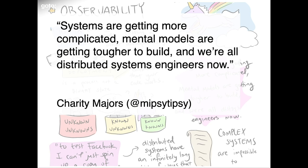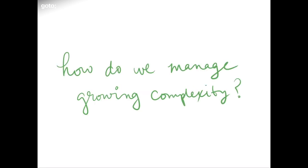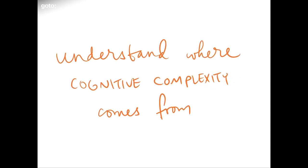Our systems are getting more complicated, mental models are getting harder to build, and everyone is a distributed systems engineer now. The part that doesn't scale — and you can't just apply a consensus algorithm to — is the human element. In some senses we're the bottleneck, but in another sense, we have endless capacity to learn and to adapt. So how do we manage this growing complexity? First, it's worth understanding where cognitive complexity comes from.